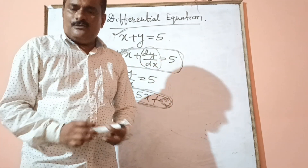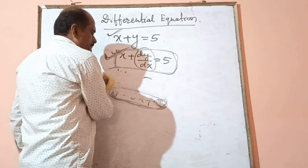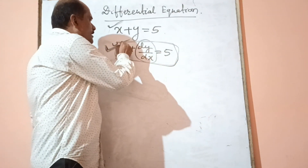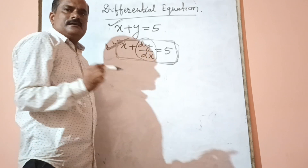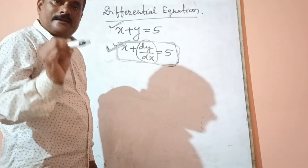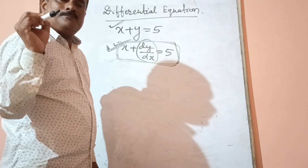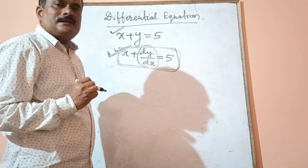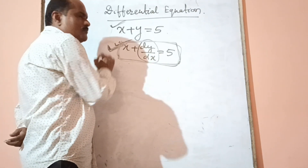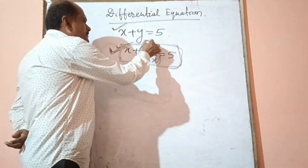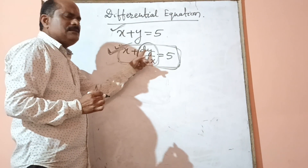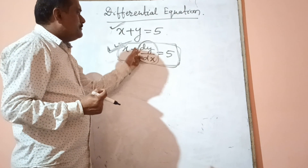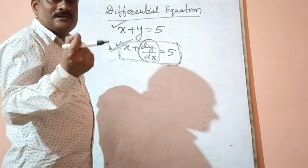Now we discuss what is the order and degree of a differential equation. The highest order derivative present in a differential equation is known as the order of the differential equation. In the equation dy/dx equals 5, the derivative of y with respect to x is taken one time, so the highest order derivative present is 1. Therefore, the order of this differential equation is 1.